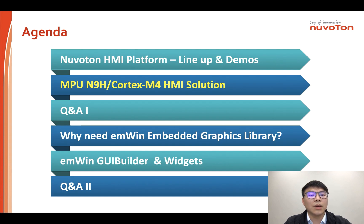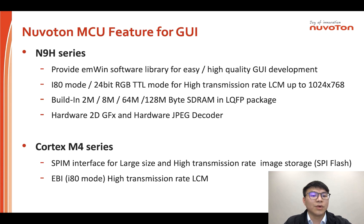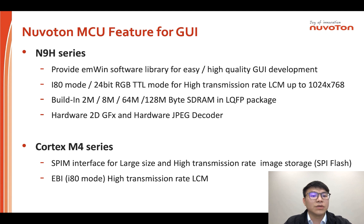This is our second agenda: N9H and Cortex-M4 HMI solution. The N9H series provides EMWIN software library for easy, high-quality GUI development, and supports I80-mode and 24-bit RGB TTL mode for high transmission rate LCD — up to 1024x768 resolution. It features built-in 2MB, 8MB, 64MB, or 128MB SDRAM in LQFP package, hardware 2D accelerator, and hardware JPEG decoder. The Cortex-M4 series supports SPI interface for large-size, high-transmission-rate image storage, and EBI I80-mode for high-performance LCD.